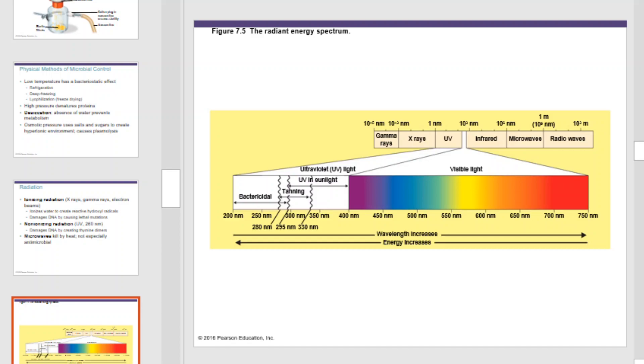The visible light spectrum exists from 400 nanometers to 700 nanometer wavelengths. Above the 400 nanometer wavelength is where we find radiation.